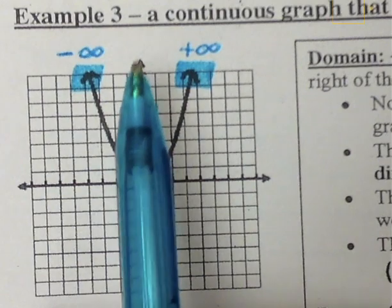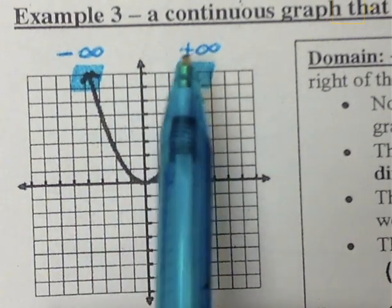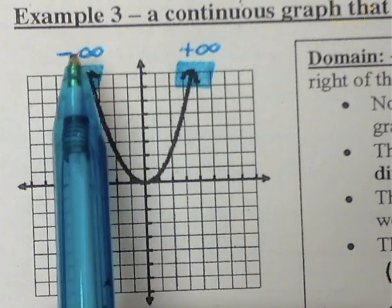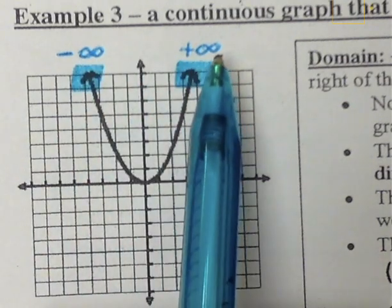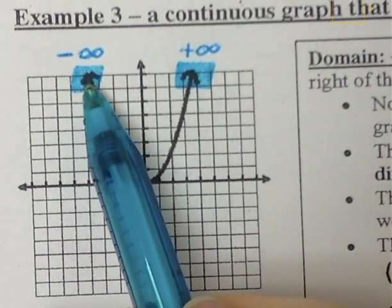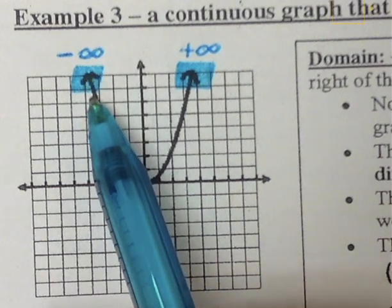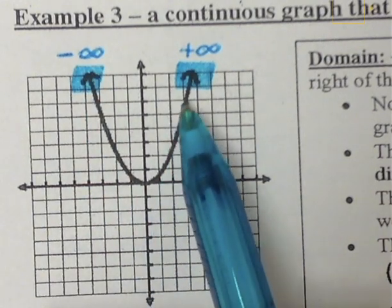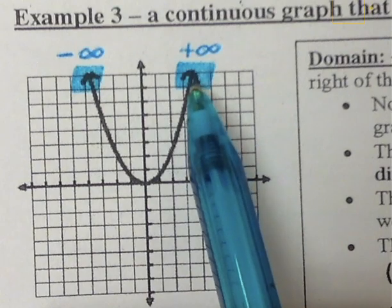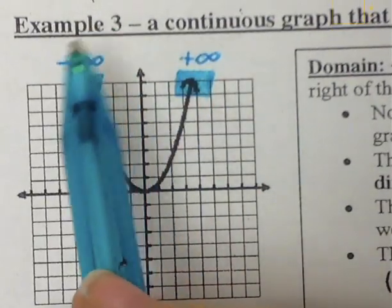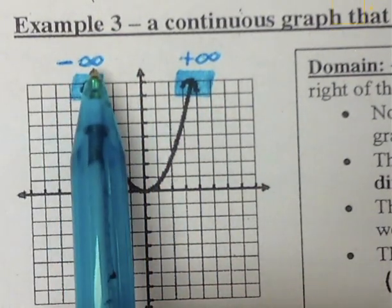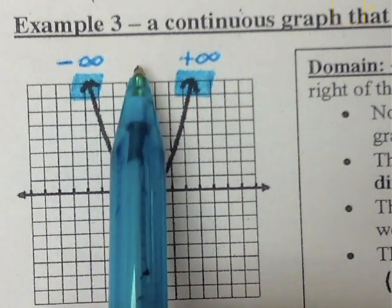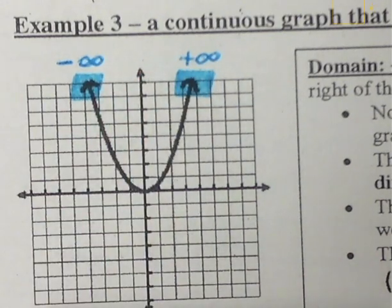So our domain will be written in interval notation as negative infinity to positive infinity. This is a continuous graph because I can go from this blue along the graph to the other blue without having to pick up my blue pen. So I can confirm that I have negative infinity, comma, positive infinity for my domain.